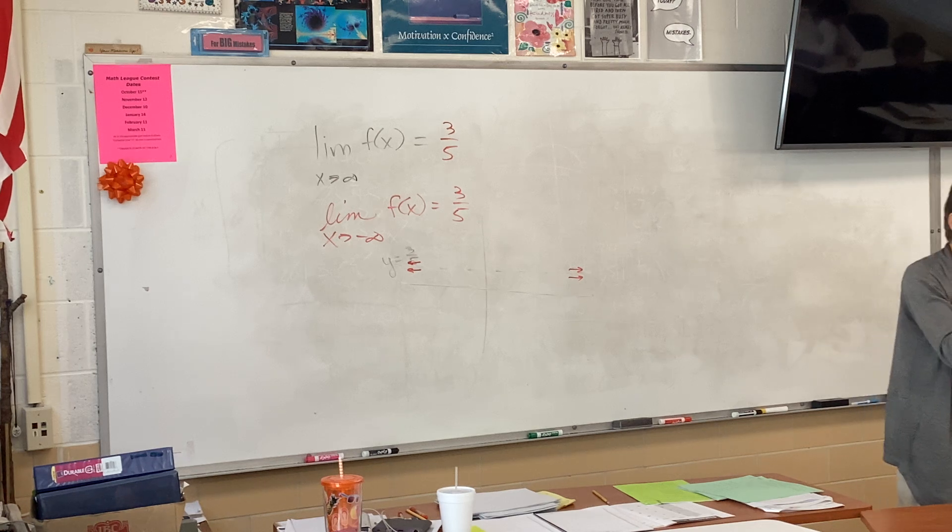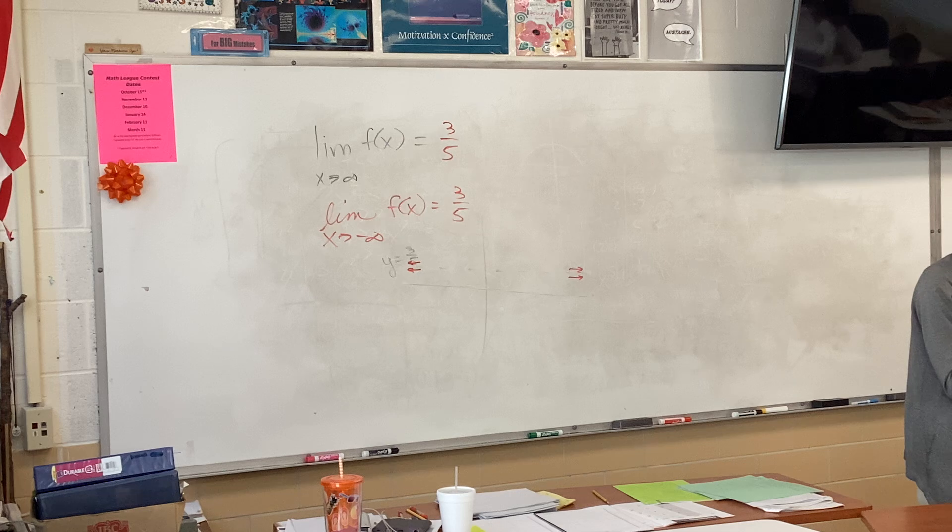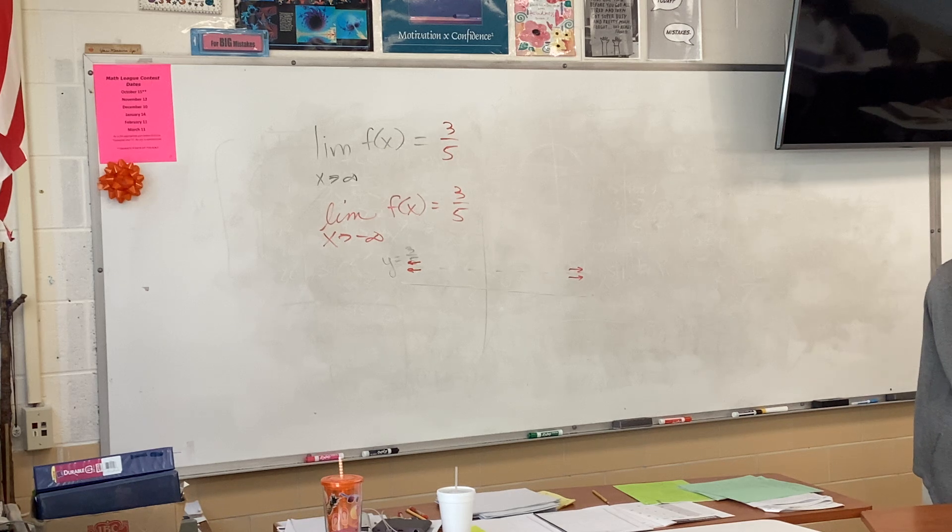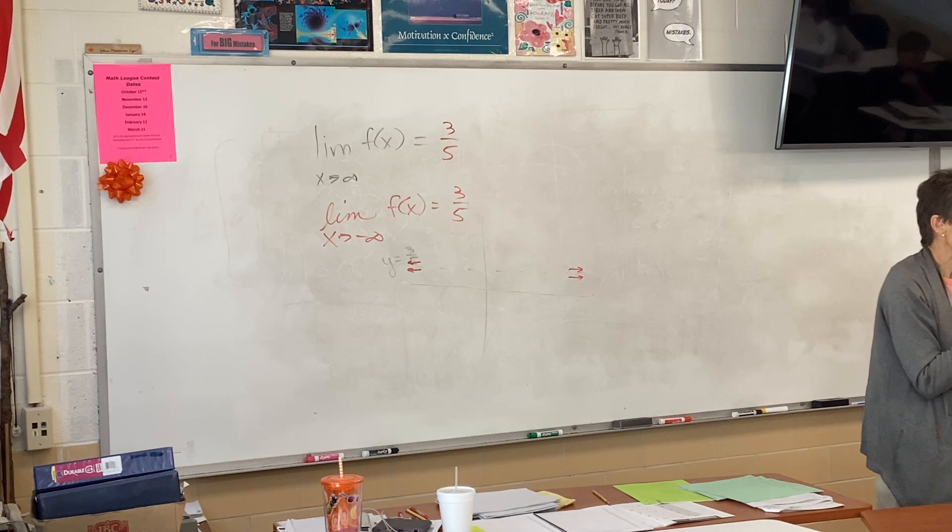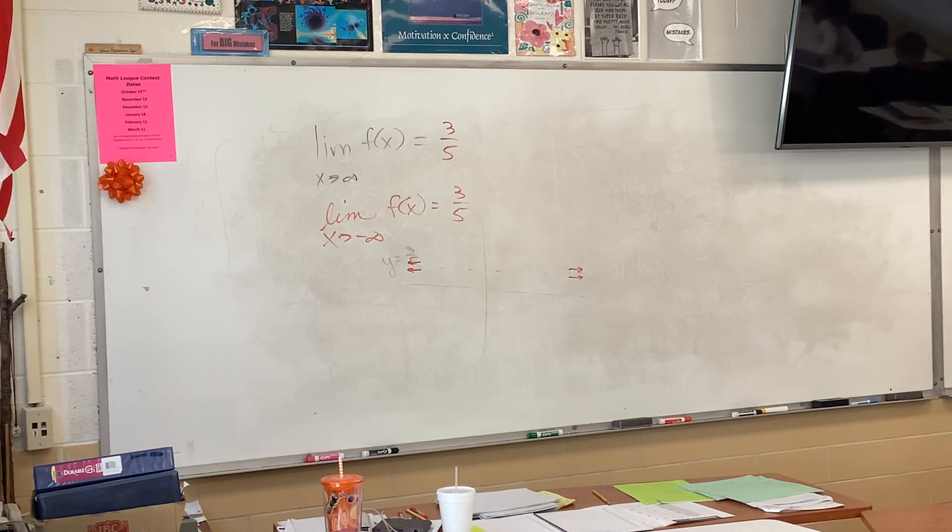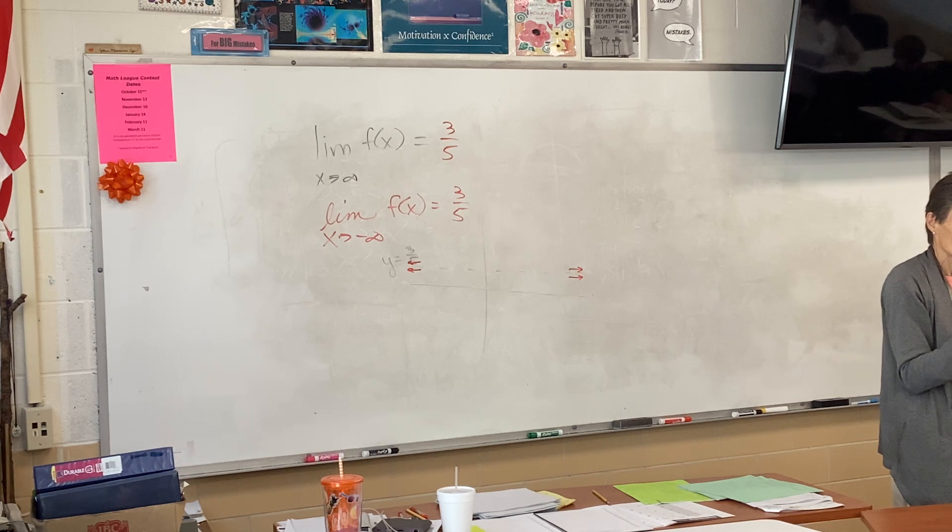Alright. What about D? I am skipping around a little bit. What about D? What will be the horizontal asymptote in D? 1 half. Y equals 1 half for D. Why is it 1 half? Because it is 4x over 8x.